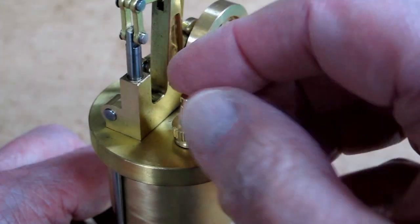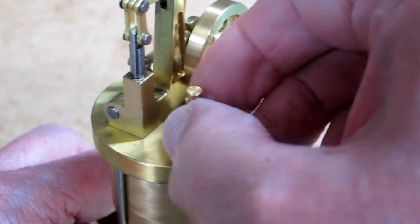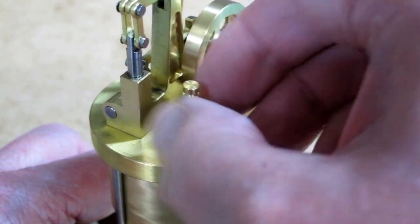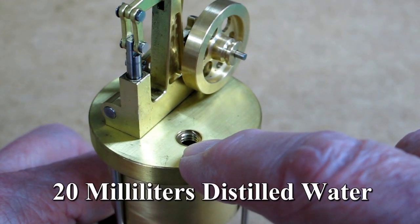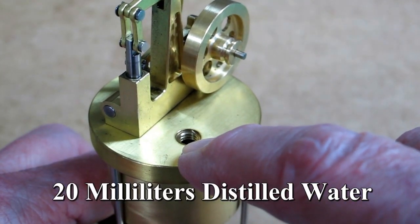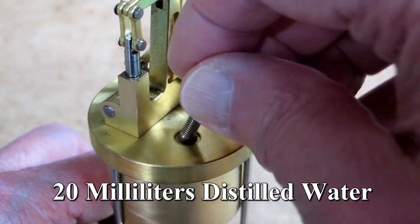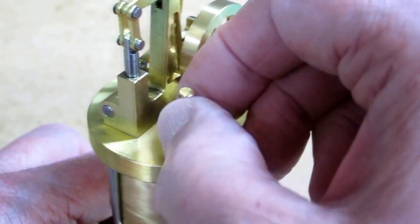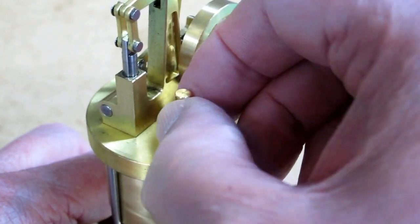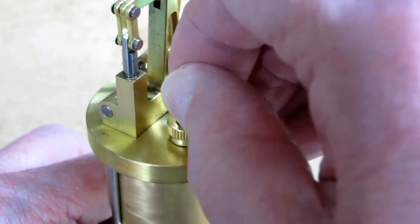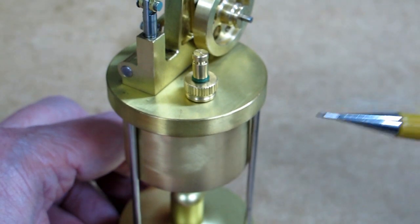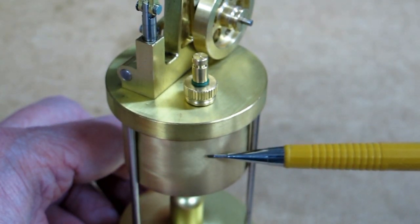If you know this boiler is empty, then you can unscrew this pressure relief valve. And you can add 20 milliliters of water with a syringe or a small funnel. Put this back in. When you tighten this down, it just needs to be firm. You don't have to tighten the heck out of it. And you should check to make sure this is free to operate. 20 milliliters of water will take you to about here.